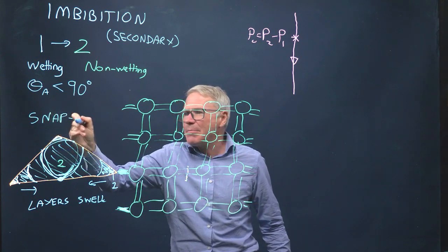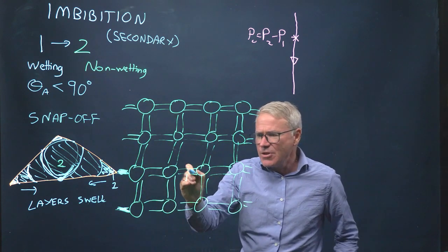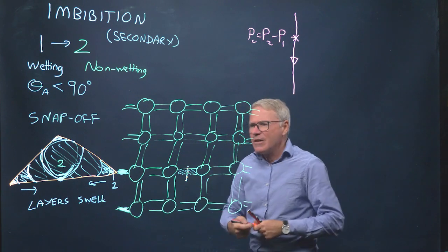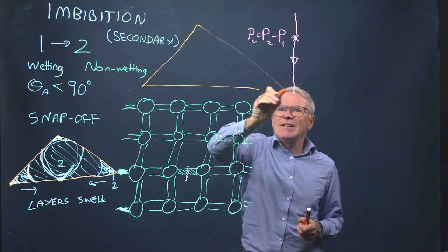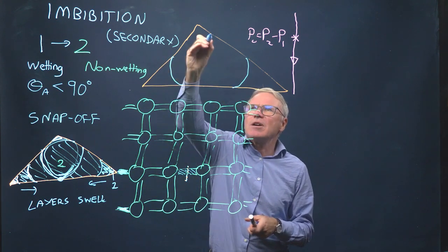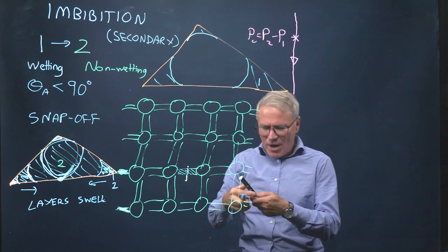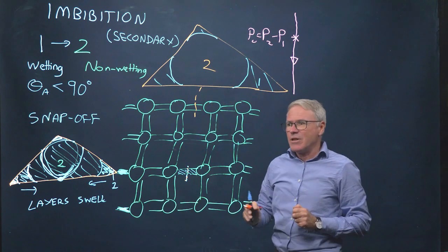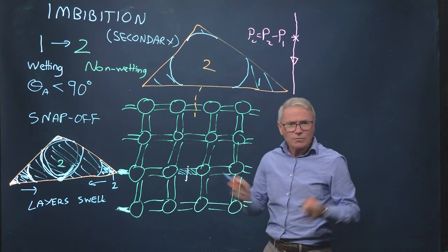Snap-off will fill first the narrowest throat. Why? Imagine I have another throat that's bigger — it has the same curvature, so the same capillary pressure. In this wider throat, we still have phase 2 in the centre. So the narrow throat snaps off first.